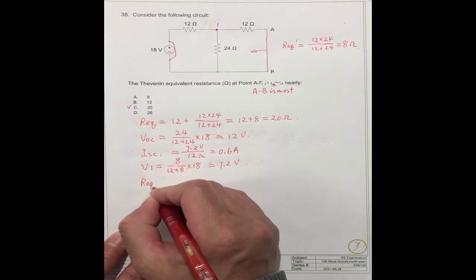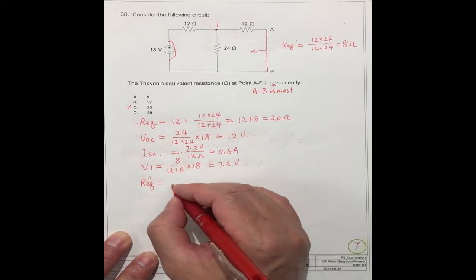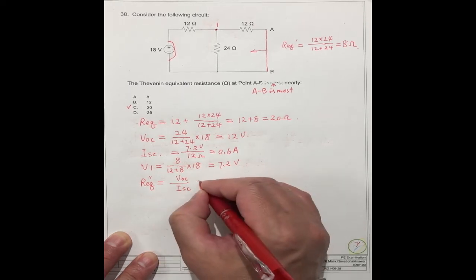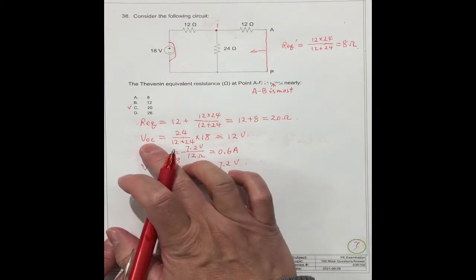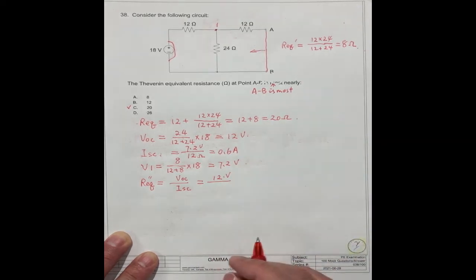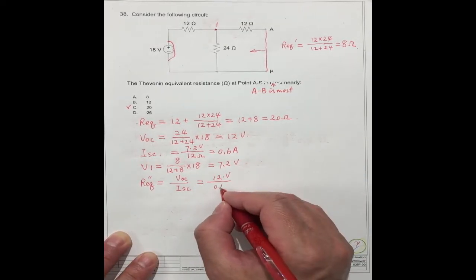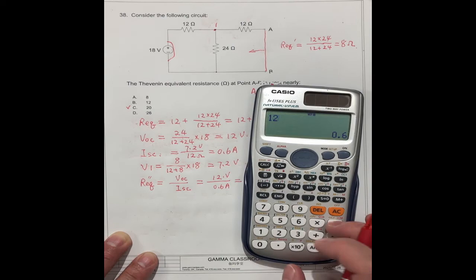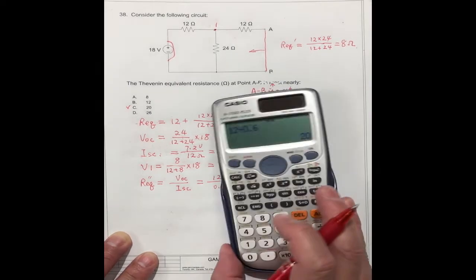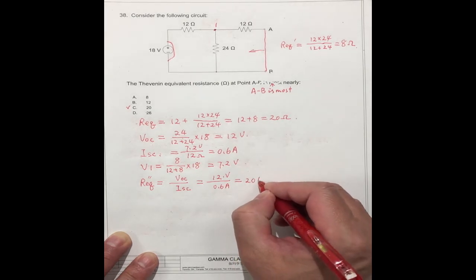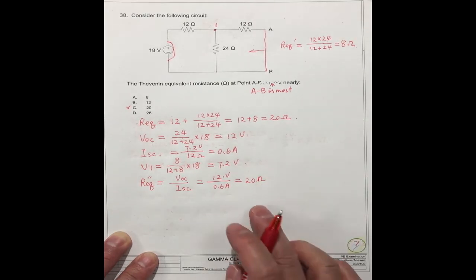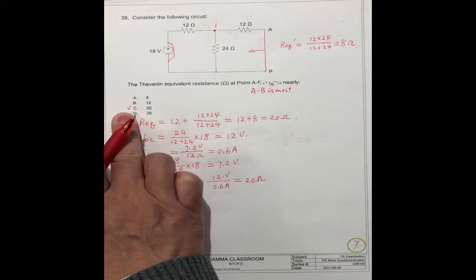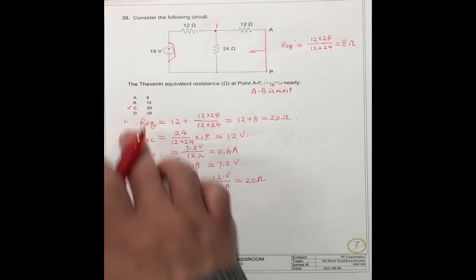The equivalent is equal to voltage open circuit divided by current I_SC. What is the voltage? Open circuit is 12. What's the current? 0.6 amperes. So 12 divided by 0.6 is 20 ohm. The answer should be the same. The correct should be C, 20 ohm.